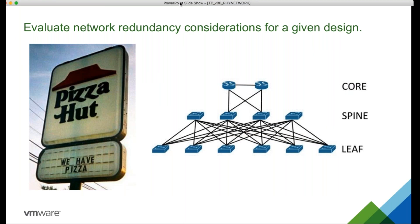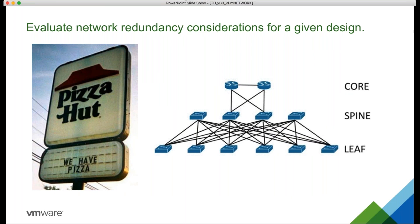Evaluating network redundancy considerations for a given design: customers say they absolutely will not tolerate a single point of failure — everything needs to be redundant. But then at the end of the design, they tell you there's no money left for a second site, so you instantly have a single point of failure. It comes down to what is actually necessary for your network. You could have so little traffic that having two of everything is overkill — you're spending twice as much money on something you don't need.